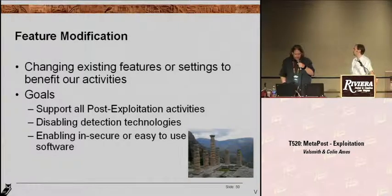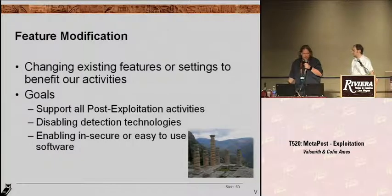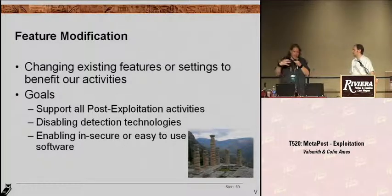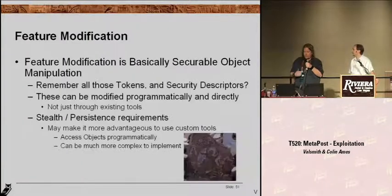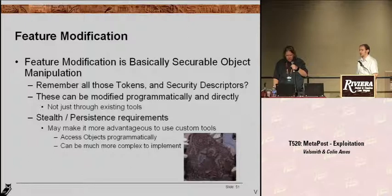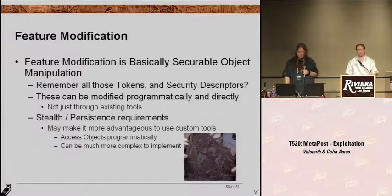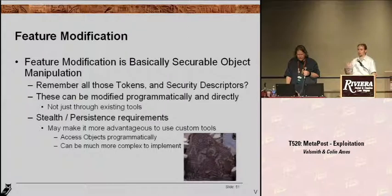Next subject matter: feature modification. This is the idea of changing existing features on a system to benefit our post-exploitation activities. Maybe you want to enable and secure things, or re-enable things they've turned off. Obviously, secureable objects control all of these things — this is how you disable things on Windows, and this is how we want to leverage this to re-enable them. It plays many roles and we've showed multiple variants of how you use it here and there and when it's important.